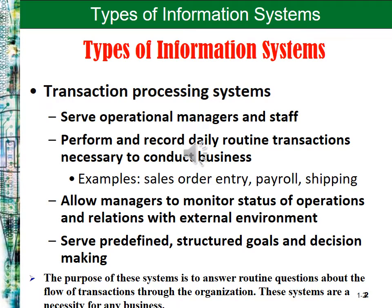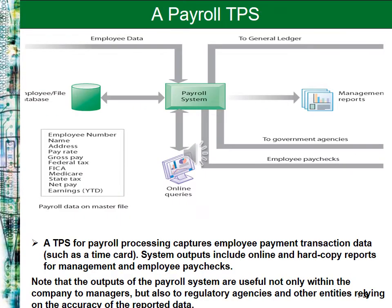We are going to describe the different types of information systems. The first of them is the Transaction Processing Systems, which convert detailed data into detailed information — information which will serve the needs of operational managers and staff. They record daily routine transactions necessary to conduct a business, help make decisions, and serve predefined structured goals. They are very important for lower-level operations managers.